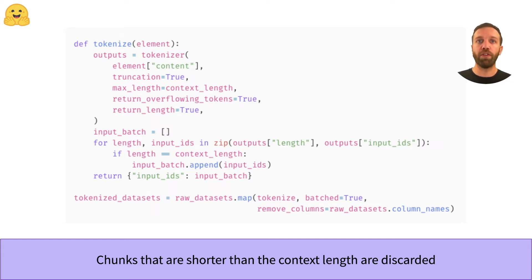Then we go through each chunk, and if its length matches the context length, we add it to the inputs we return. We can apply this function to the whole dataset.